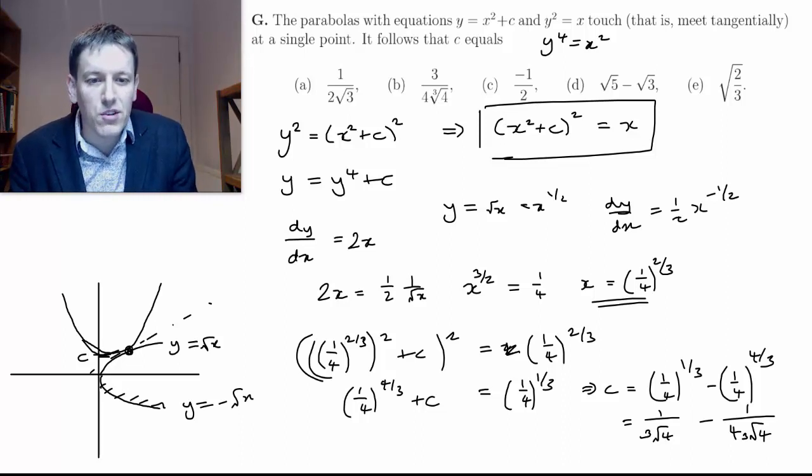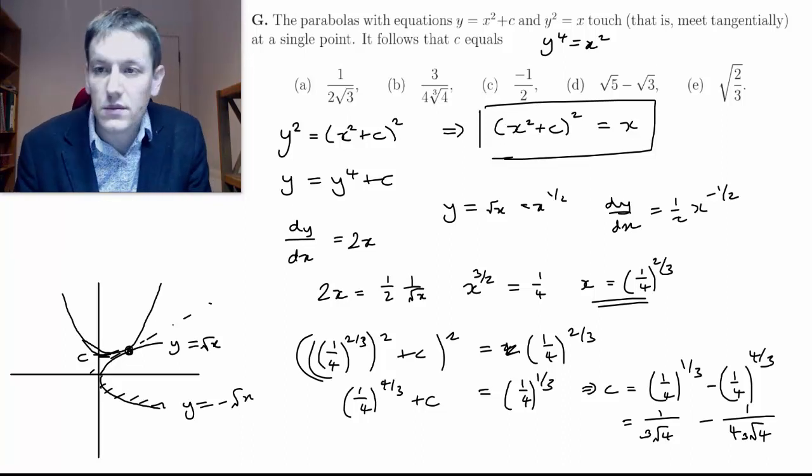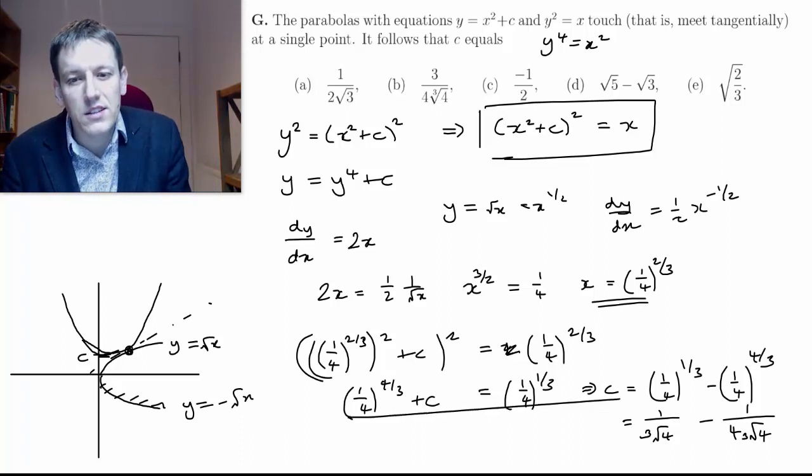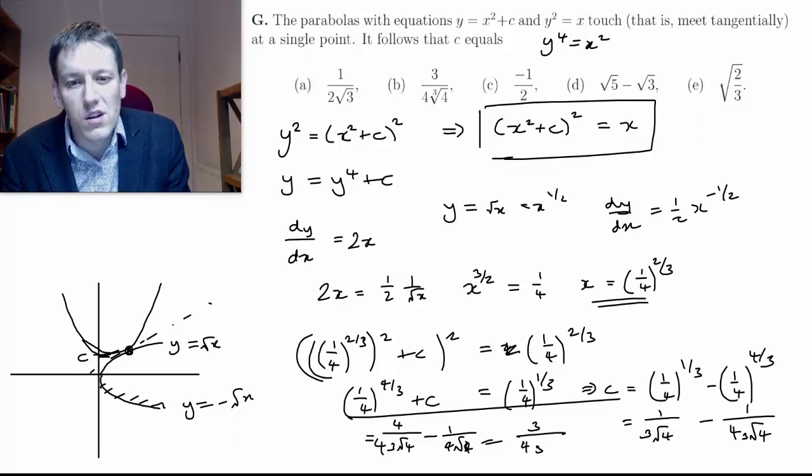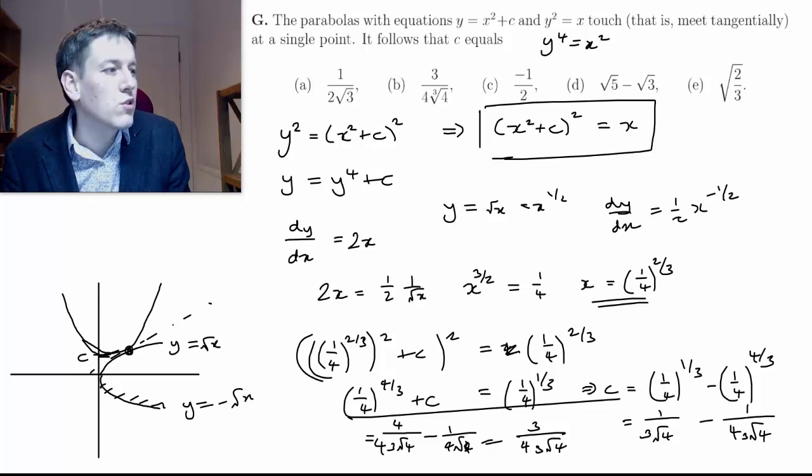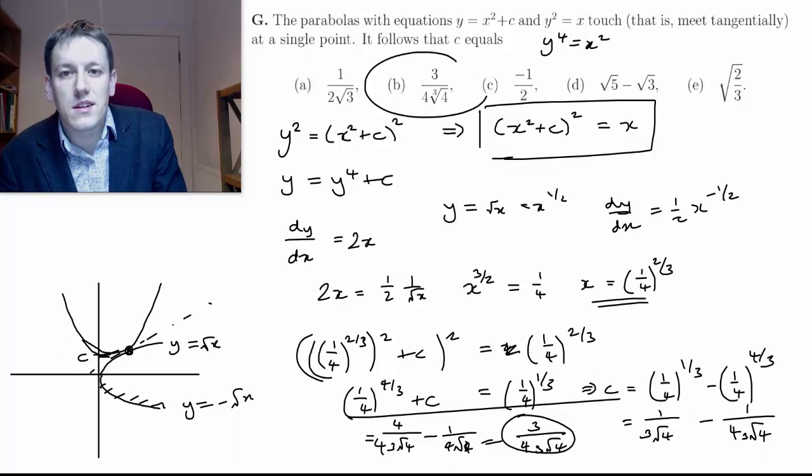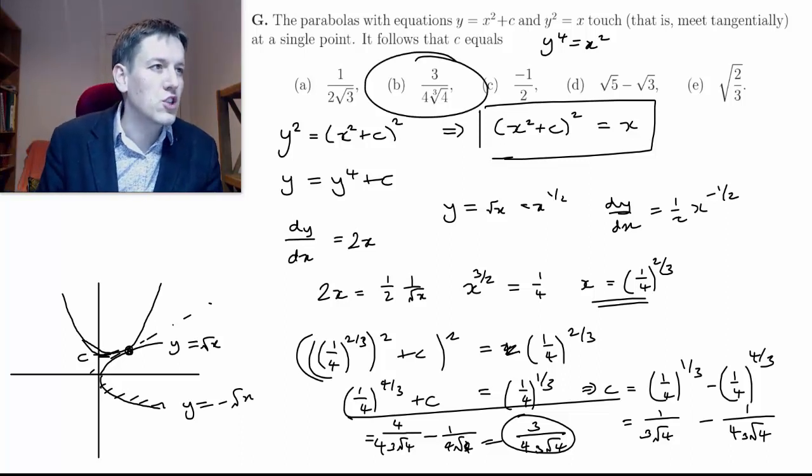Then I can just put these over a common denominator now. This is going to be equal to—I have to multiply this first one by 4 top and bottom—so I've got 4 over 4 times the cube root of 4, minus 1 over 4 times the cube root of 4. So that gives me a final answer of 3 over 4 times the cube root of 4, and that is one of the answers here. That's b, 3/(4∛4).